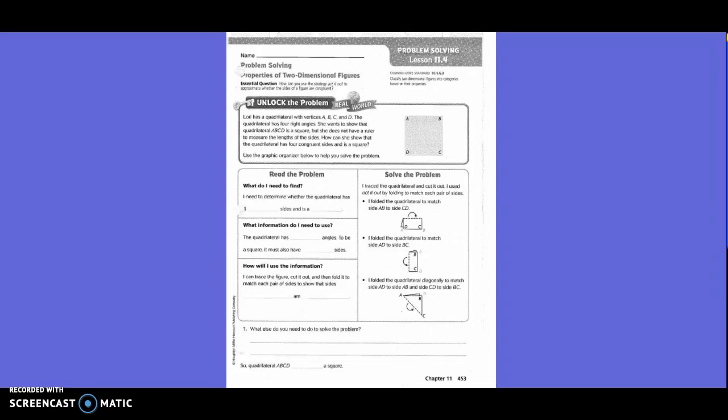To unlock the problems, Lori has a quadrilateral with vertices A, B, C, and D. The quadrilateral has four right angles. She wants to show that quadrilateral ABCD is a square because she does not have a ruler to measure the length of the sides. How can she show that the quadrilateral has four congruent sides and is a square?